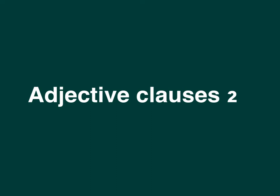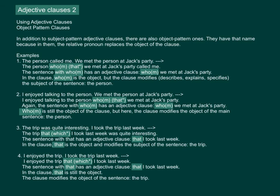Adjective Clauses Part 2. In the previous lesson, we covered Subject Pattern Adjective Clauses. In this lesson, we continue with Object Pattern Adjective Clauses. In addition to Subject Pattern Adjective Clauses, there are also Object Pattern ones. They have that name because in them, the relative pronoun replaces the object of the clause.